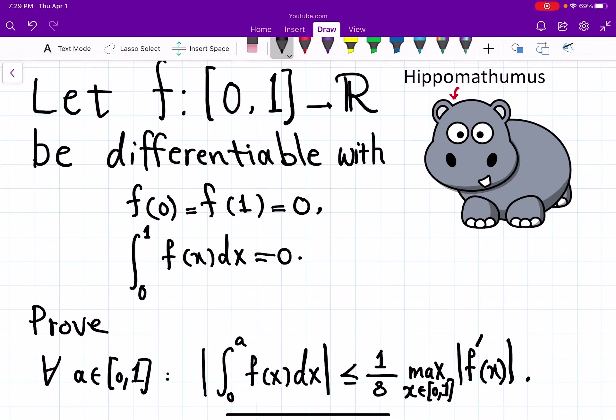So it may look a little scary at the beginning. Why 1 over 8? Why these assumptions? And how are we going to put them together?